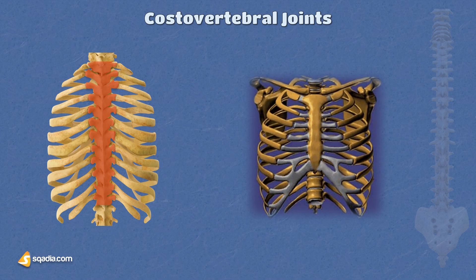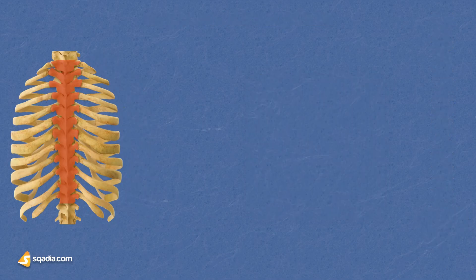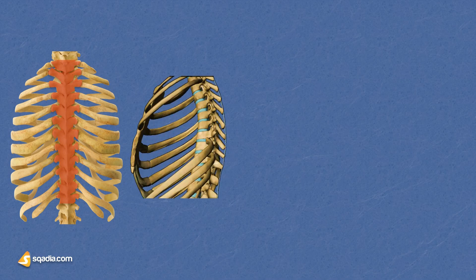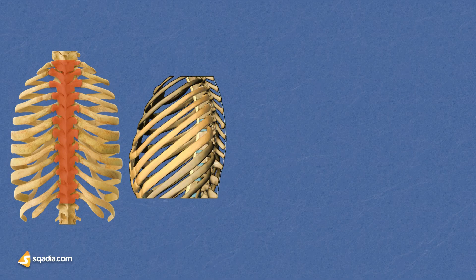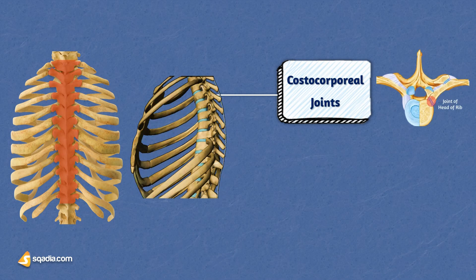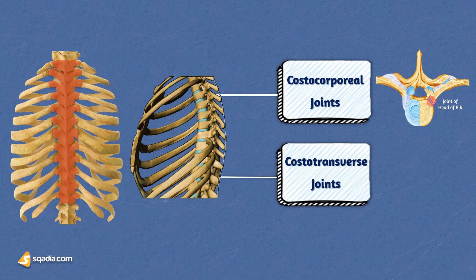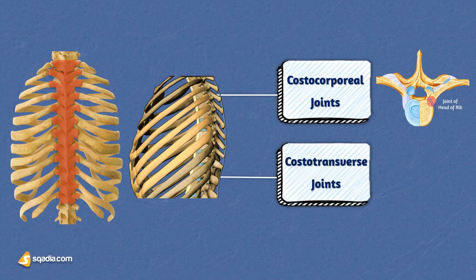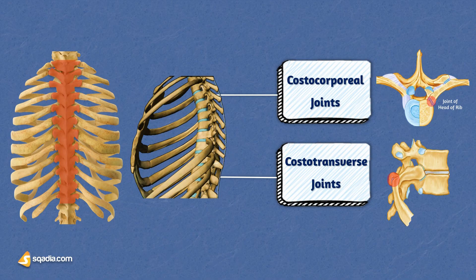These joints form two groups of plain synovial joints, connecting the proximal ends of the ribs to their corresponding vertebrae. The first group is called the costocorporeal joints, found between the heads of ribs and the adjacent vertebral bodies. The second group is the costatransverse joints, where the rib's tubercle articulates with the transverse process of its related vertebra.